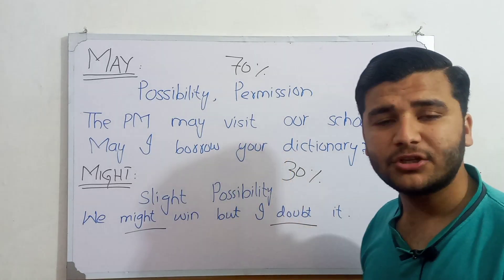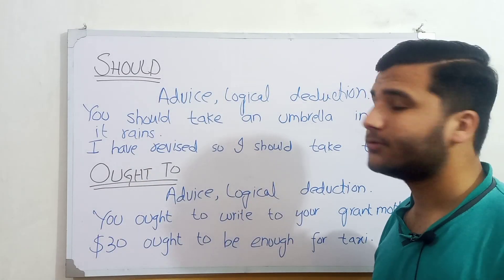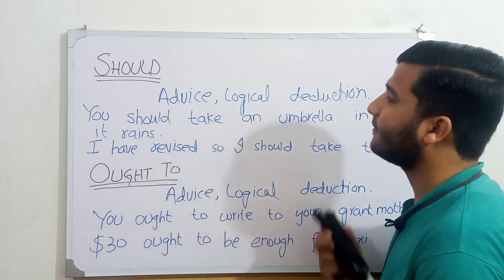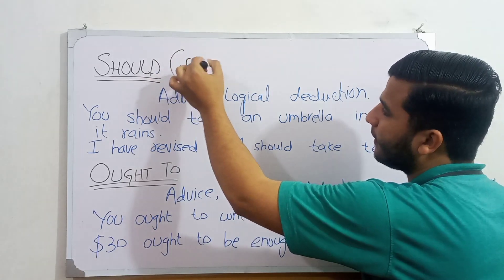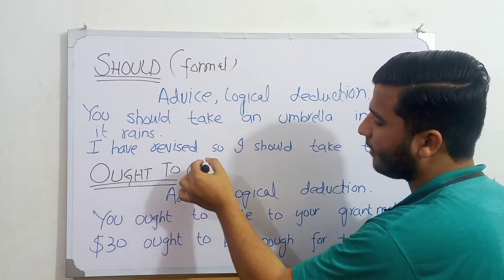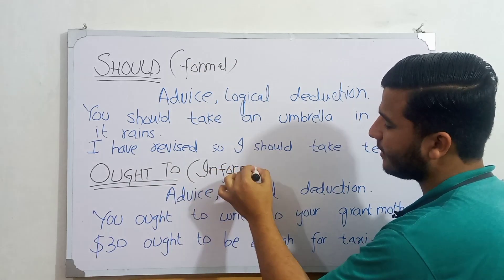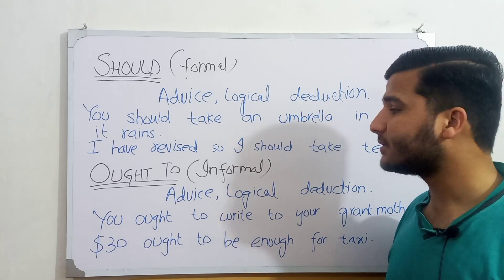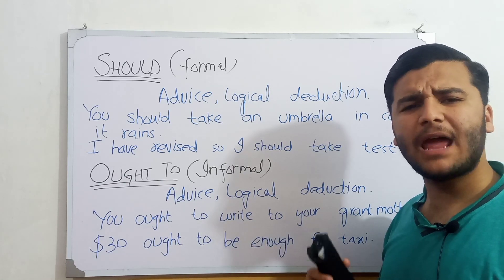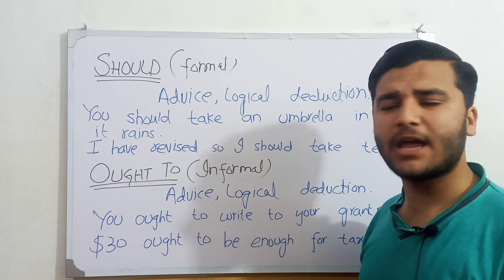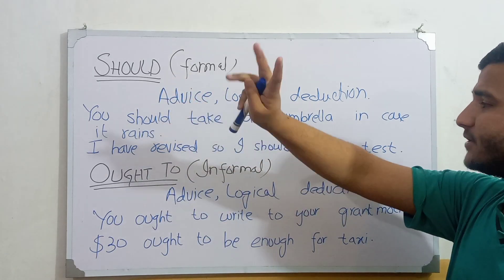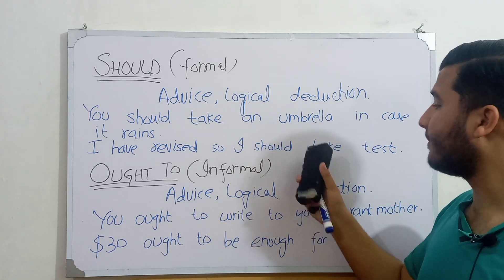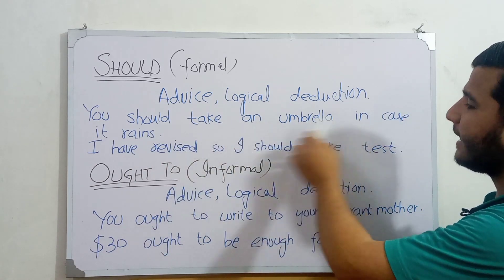Now we will talk about 'should' and 'ought to.' Both have the same functions in English grammar, but 'should' is formal while 'ought to' is informal. That is why you will find 'should' frequently in English grammar books and novels, while 'ought to' is only lightly used in written and spoken English. 'Should' has two functions: advice and logical deduction.